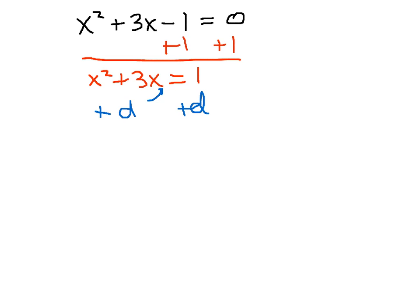Find this missing piece that we want to add to both sides. The formula for d: remember, we take the middle term, which in this case is 3. To solve for d, we take 3, divide it by 2, and then square it. So in order to write a perfect square trinomial, I'm going to have to add the factor of 9 fourths to both sides.